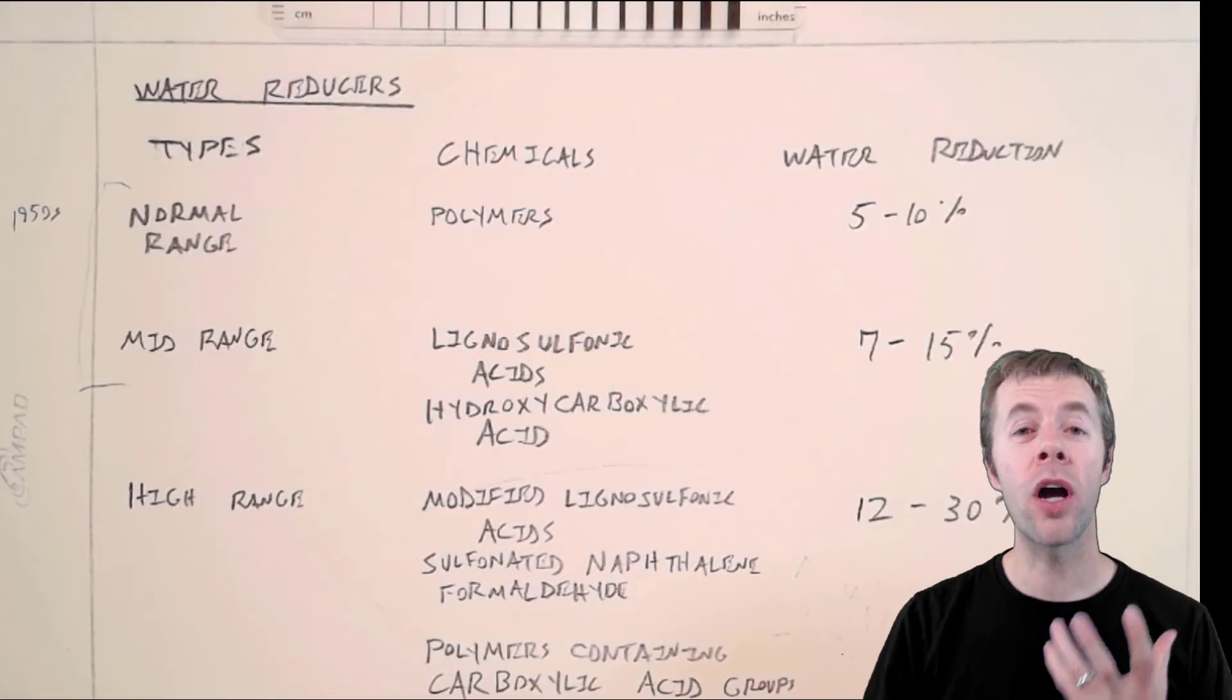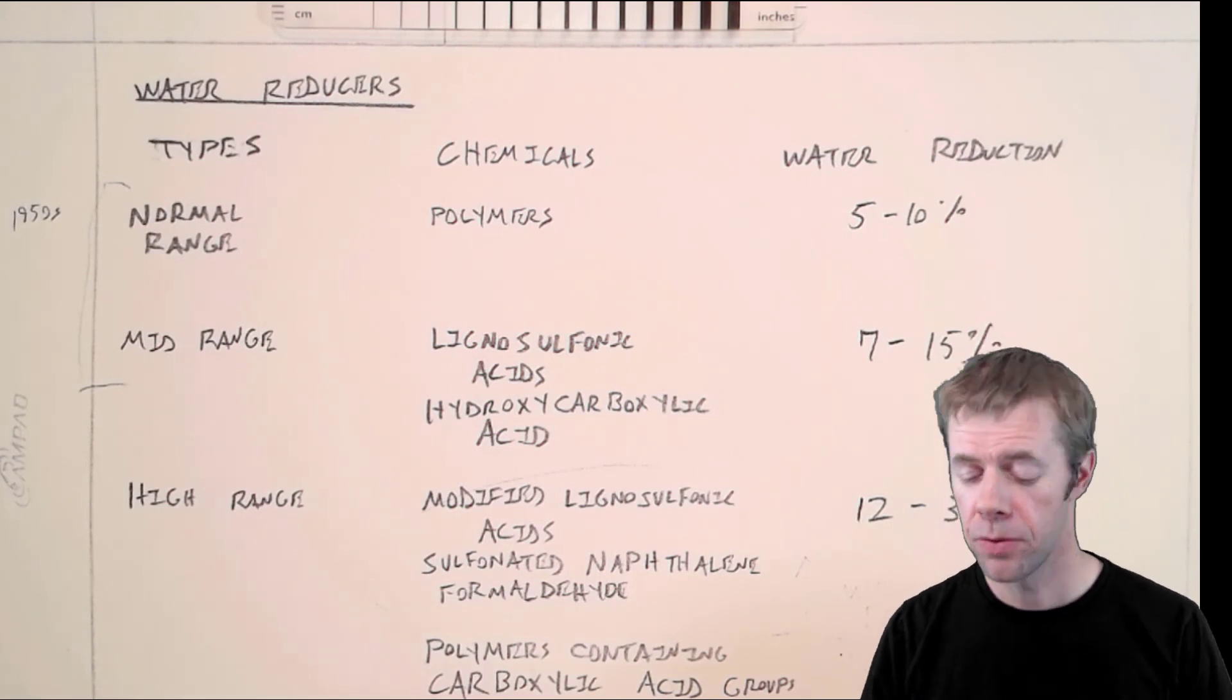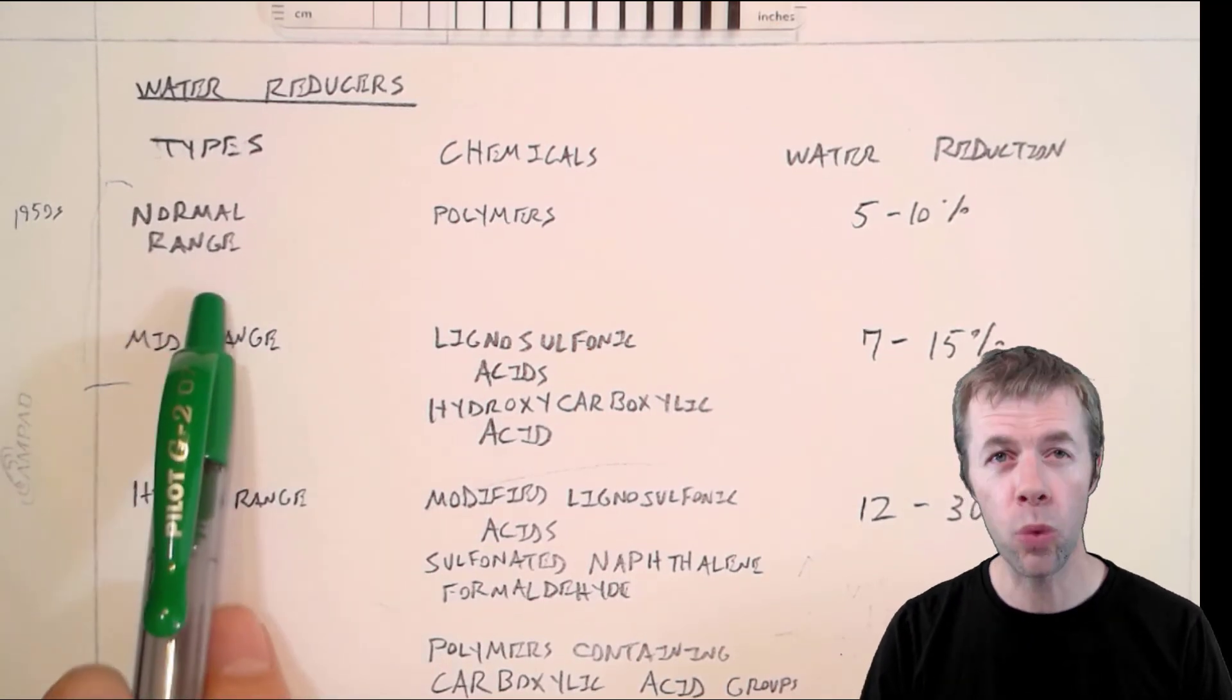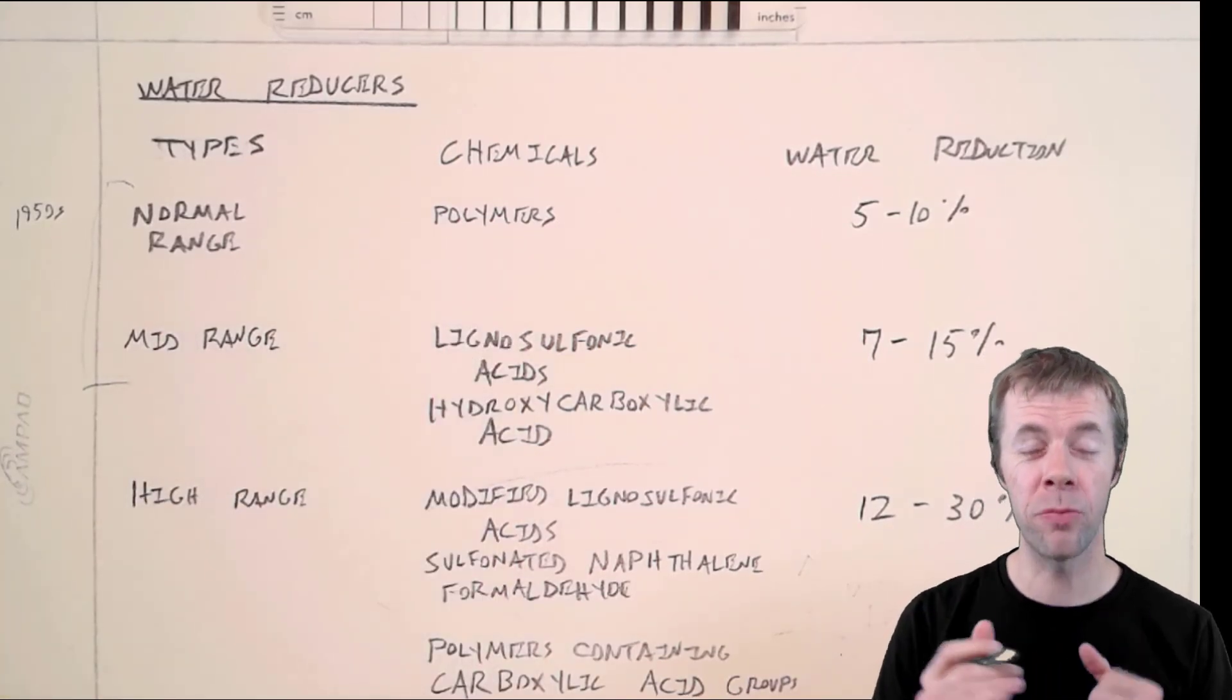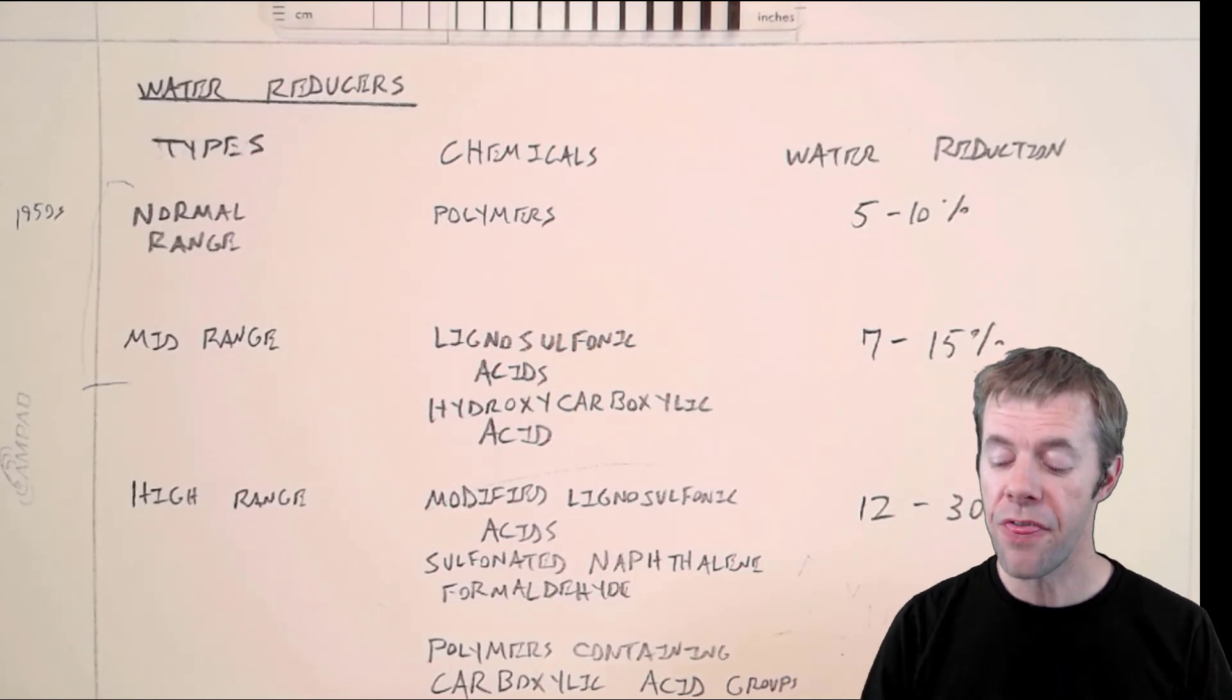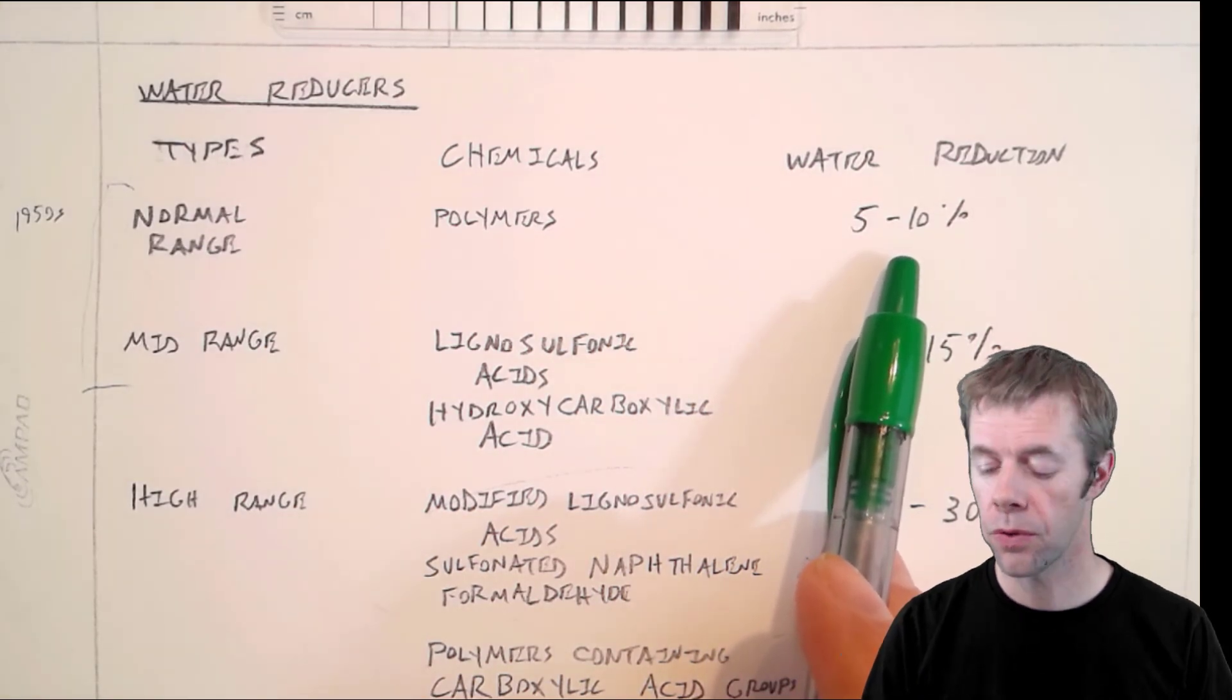Today we're going to be talking about water reducers primarily, and we're going to go back through history. In the 1950s, it was about the first time people started to introduce water reducers. There were normal range water reducers, often waste products from other industries, a lot of times from the animal processing industry. And this is about how much water reduction you could get: about 5% to 10%.